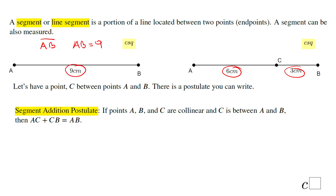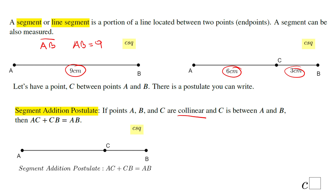That's the reason we call it a postulate. It's a true statement — you don't have to prove it. And this is exactly what you see on that picture. If points A, B, C are collinear — which means on the same line — and C is between A and B, then AC plus CB equals AB. So this is the postulate that I use here.